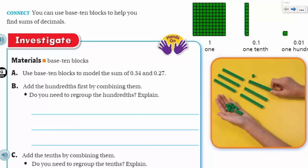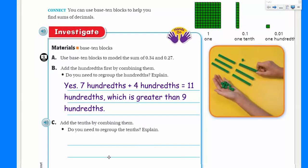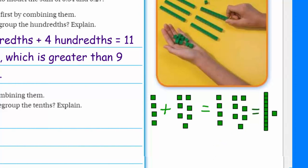Do you need to regroup these hundredths? Yes, we would. The 7 hundredths plus the 4 hundredths, that's going to equal 11 hundredths, which is greater than 9 hundredths. We use the base-10 system in math. Every time we get a group of 10, we move on.